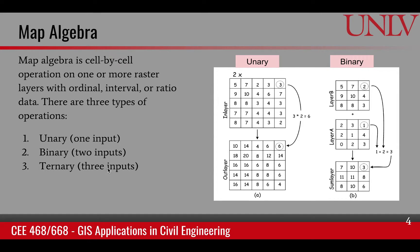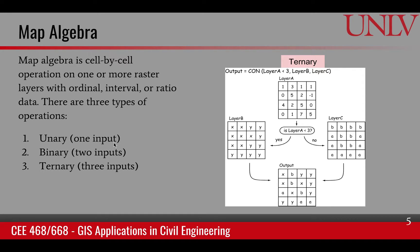A ternary operation requires three inputs. Here is a ternary operation called the conditional operator. It has three inputs: layer A, layer B, and layer C. The first input is a condition, and the other two inputs are the choices. The condition is if layer A is less than 3. If this condition is true, then choose layer B. If false, then choose layer C.